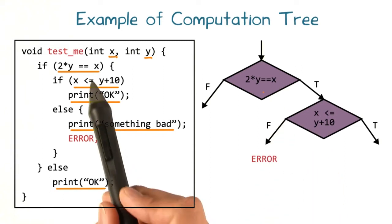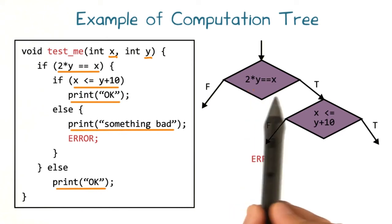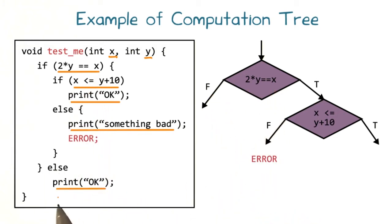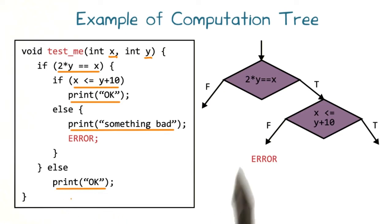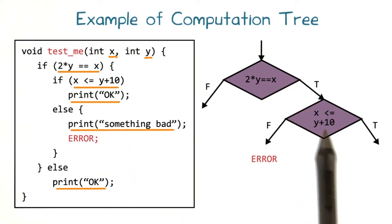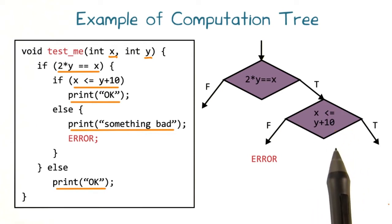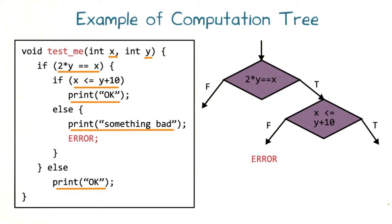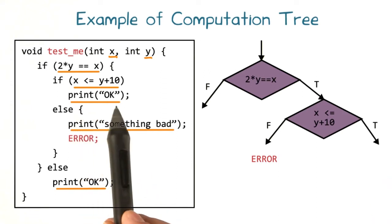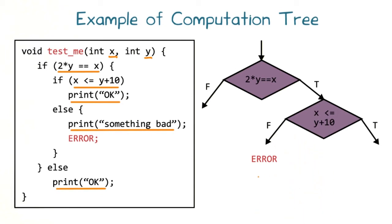The computation tree that results from this program has just two nodes corresponding to the two branch points. The root node is labeled '2 times y equals x'. If this test fails, the program exits normally, so the root has no left child. If the test succeeds, we reach another branch point — the root has a right child labeled 'x is less than or equal to y plus 10'. If this test fails, the program throws an error, symbolized by marking the left edge with 'error'.